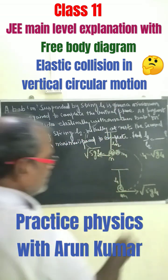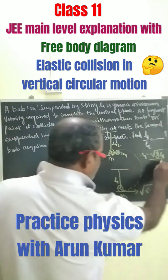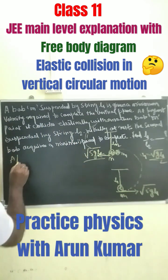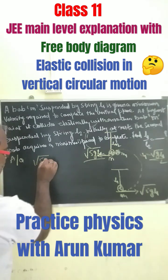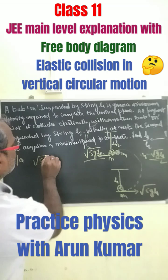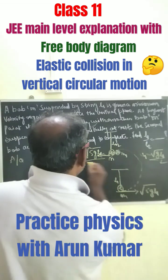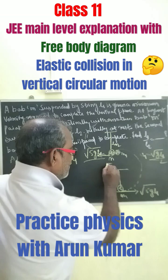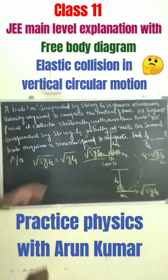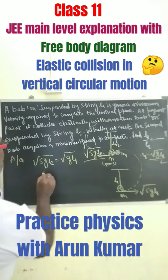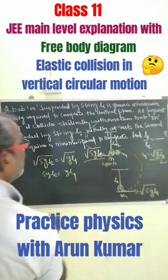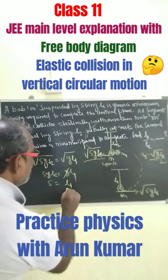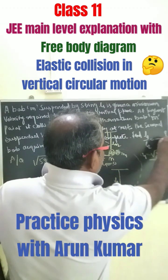According to the question, the velocity acquired by the second bob must equal the minimum velocity to complete its circle. So we set √(5gl2) = √(gl1). Cancelling the square roots and the g, we get 5l2 = l1, therefore l1/l2 = 5.